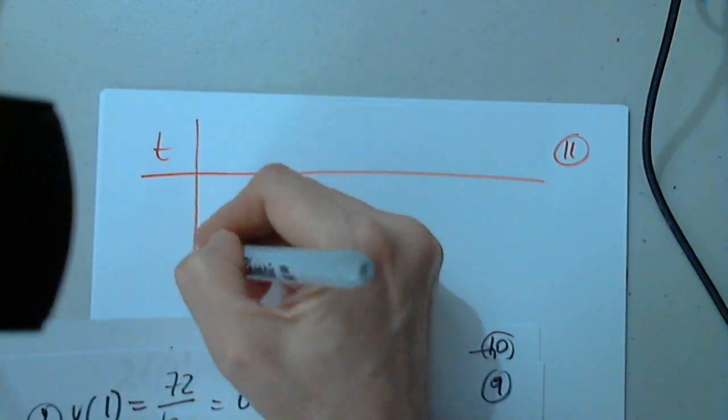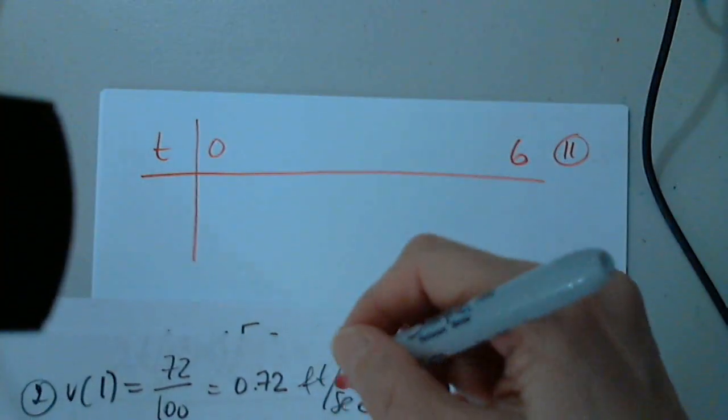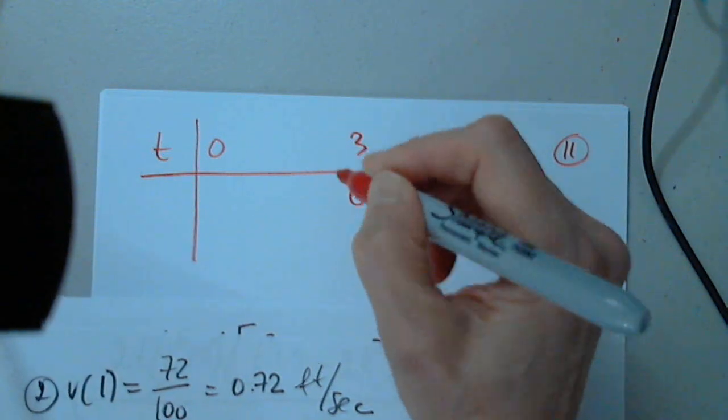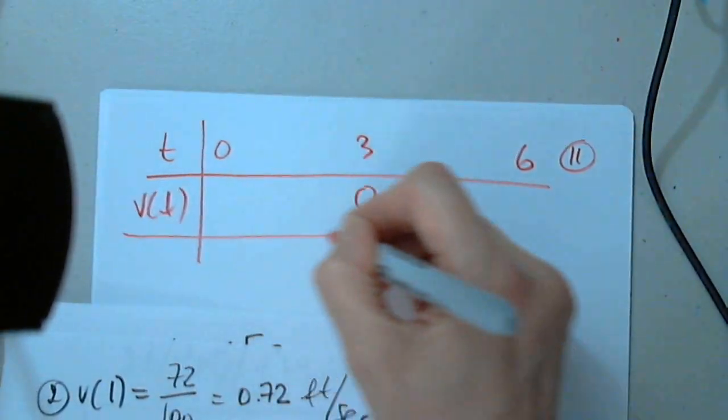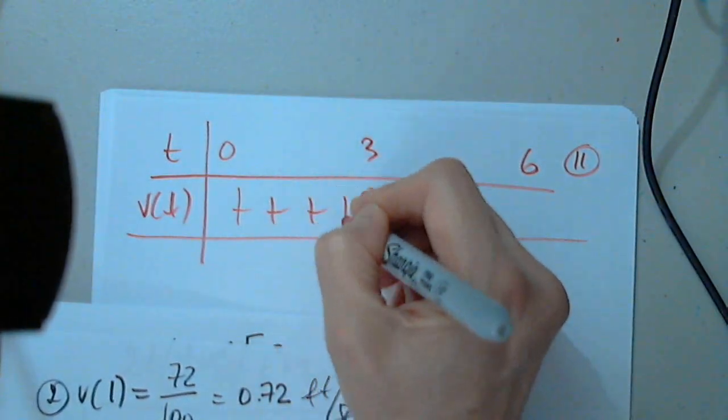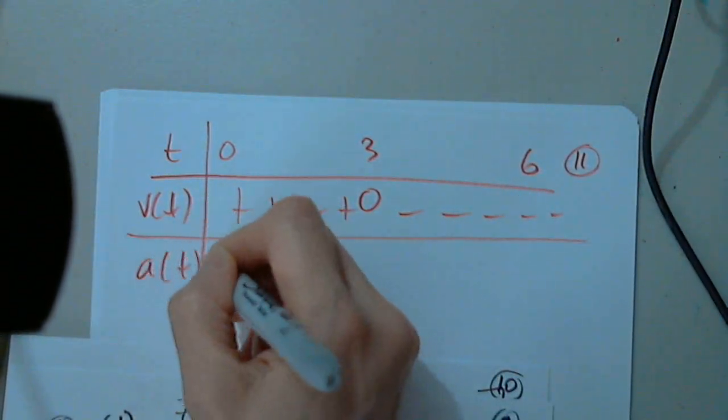t between 0 and 6. I already know that at 3 this is 0. I already established this, and now I have a of t.